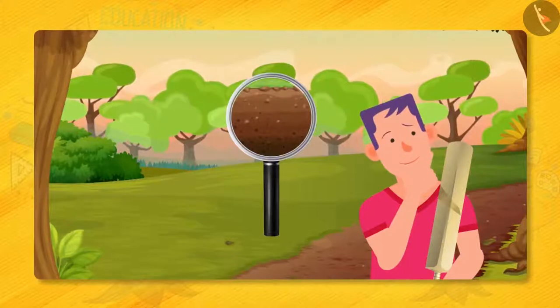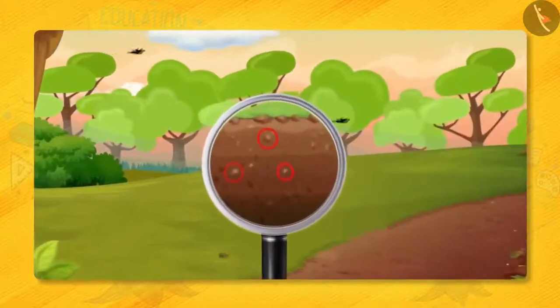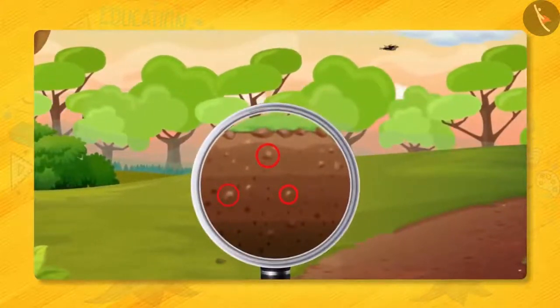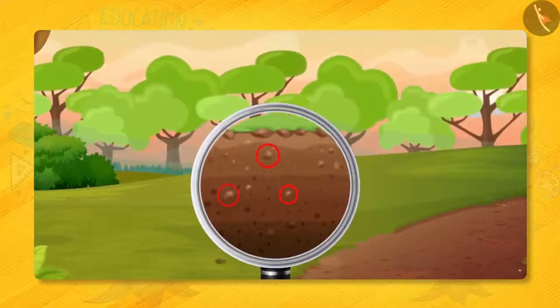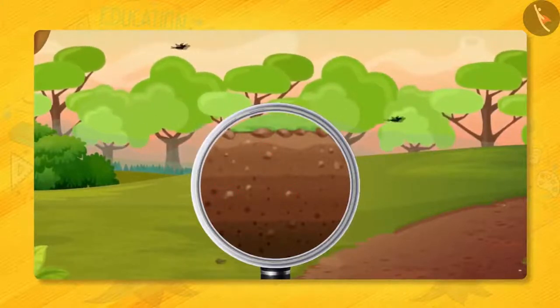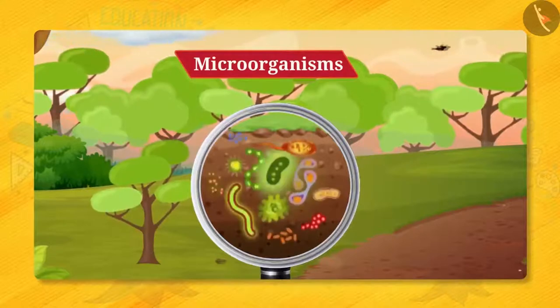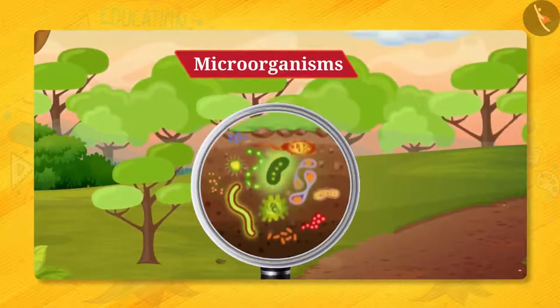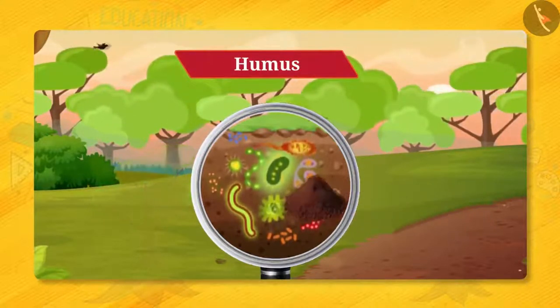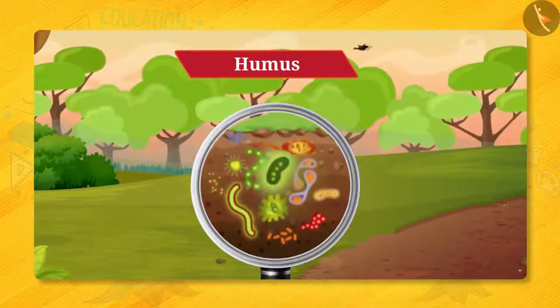If you look closely, what can you observe? Small particles in the soil. Is there anything other than this? No. But in addition to small particles, soil consists of microorganisms and humus. Humus is nothing but decay of living organisms which makes the soil porous.